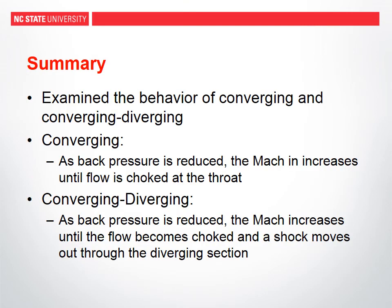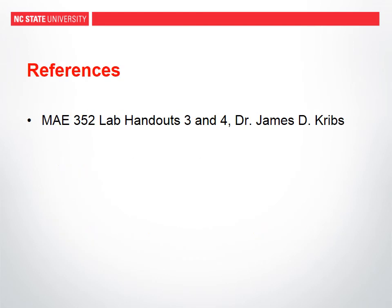To summarize these experiments, the flow through the converging nozzle became choked when the back pressure was about 70 psi, and the flow through the converging-diverging nozzle was choked around 90 psi. The flows remained in regimes 1 and 2 for both types of nozzles throughout the experiment. This concludes our video for labs 3 and 4 — thanks for watching!